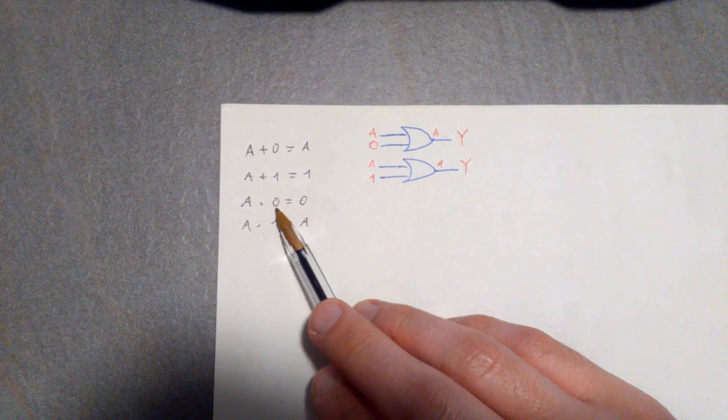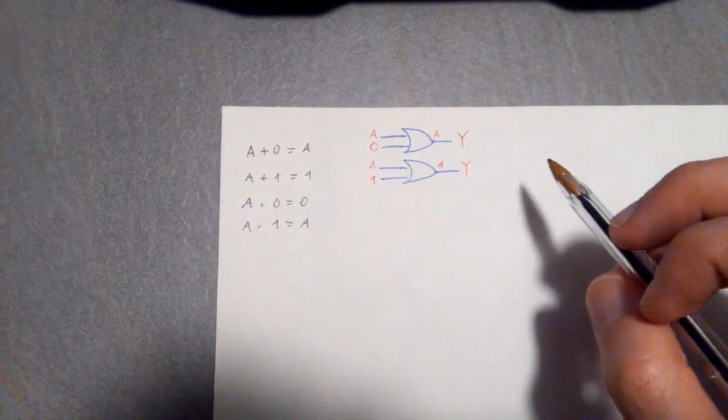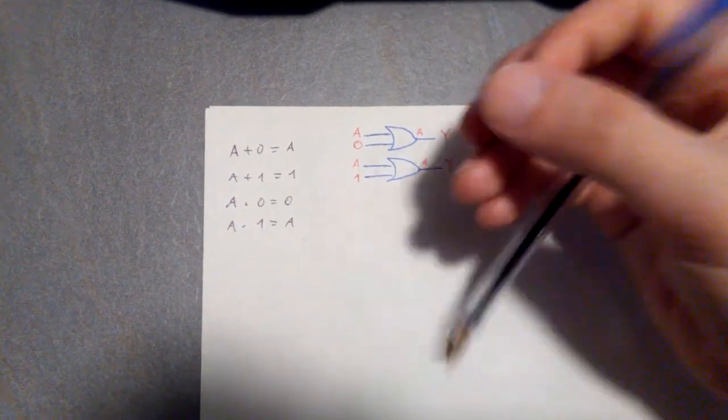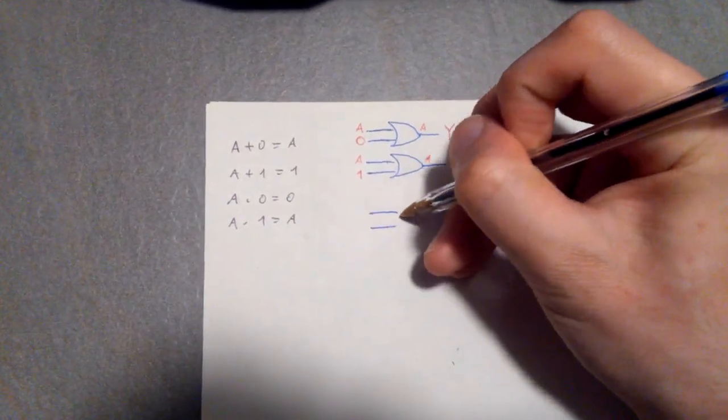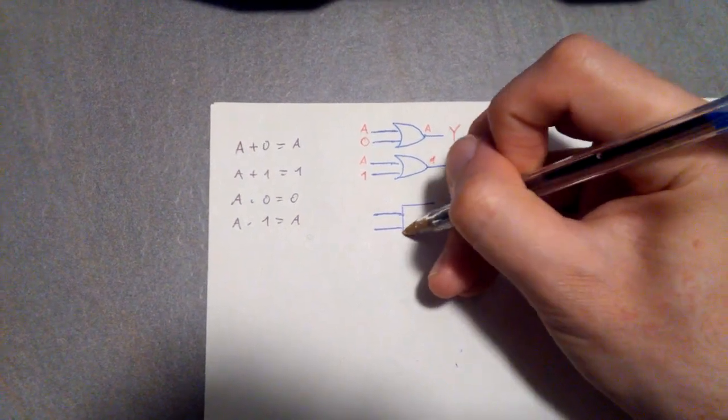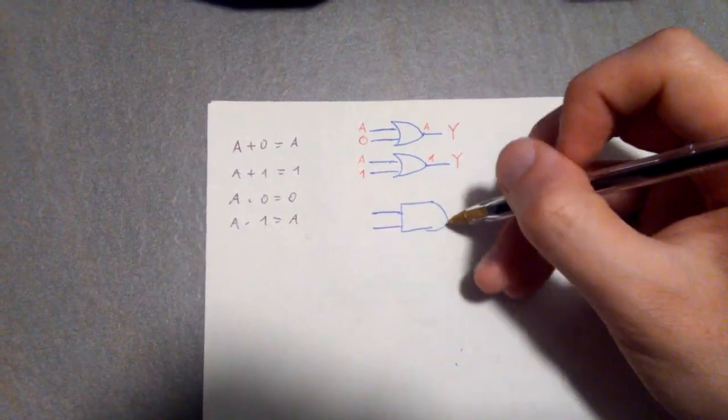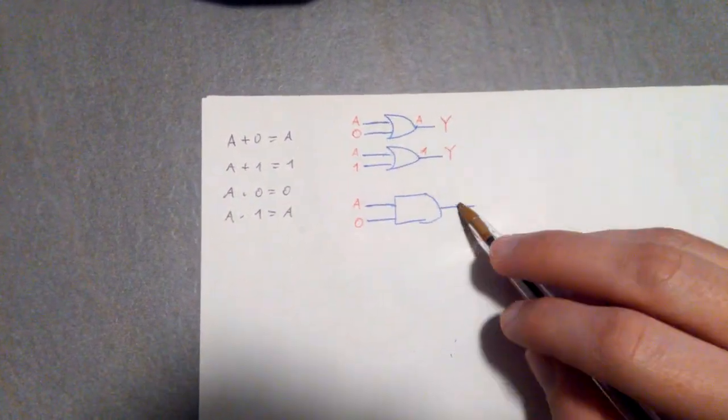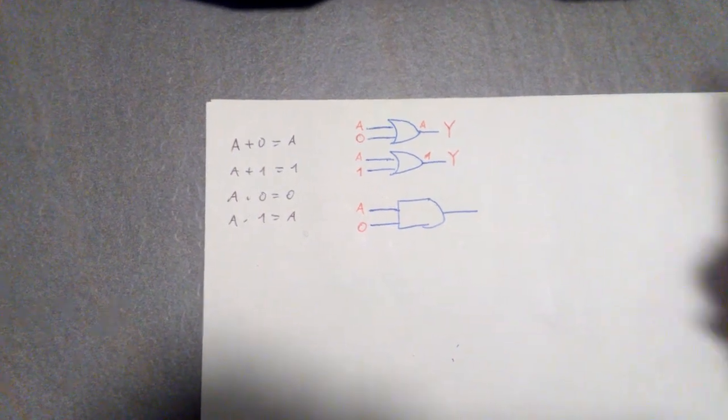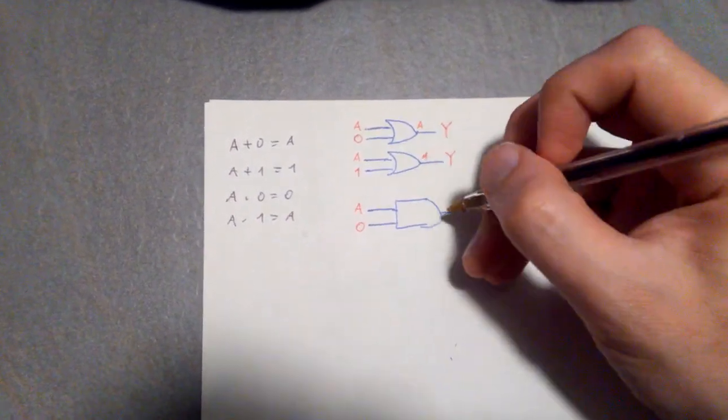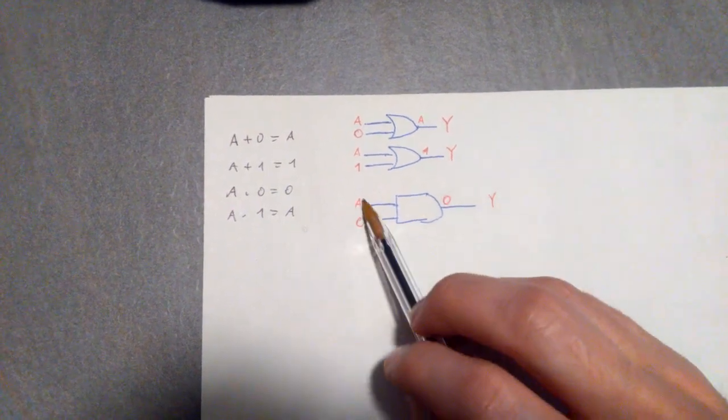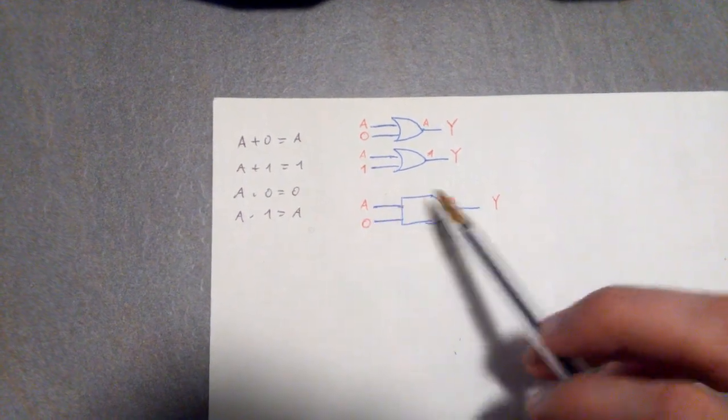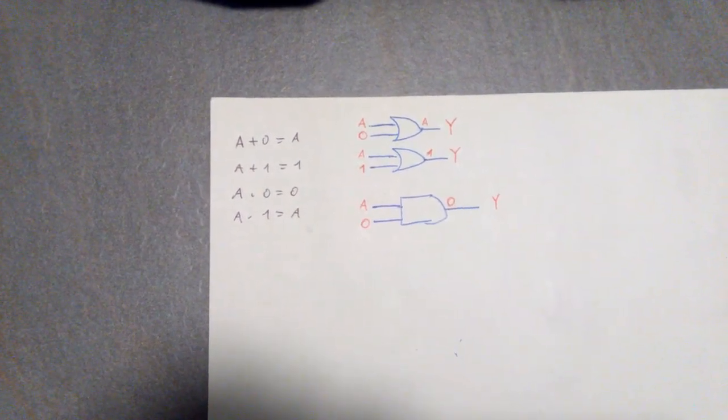This one, however, A times 0 equals 0 and A times 1 equals A, basically means that if we have an AND gate like so, where we have A and 0, then the output Y is always going to be 0 because they both have to be 1 in order for the output to be 1. So if at least one of them is 0, then the output is always going to be 0.